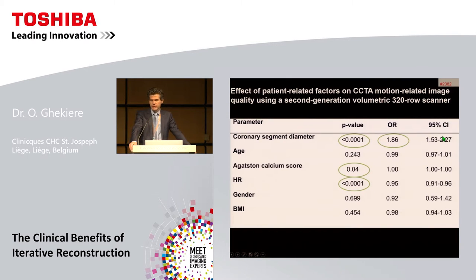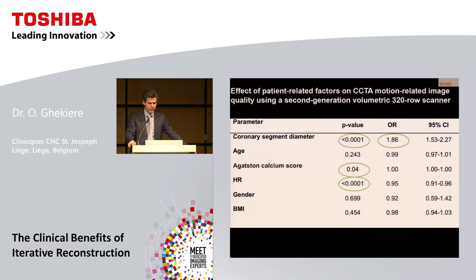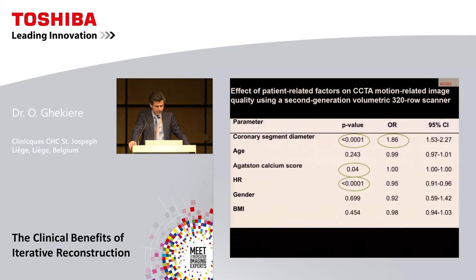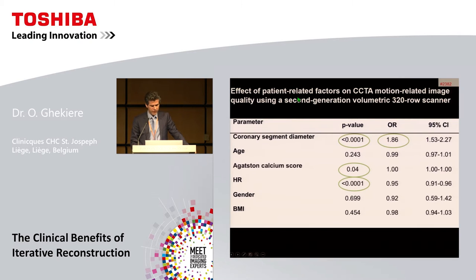Given the technical advances of the second-generation volumetric 320-slice scanner — the Aquilion ONE Vision — with faster gantry rotation time, 16 cm coverage, integrated iterative reconstruction, and automated exposure control, we performed a study evaluating patient-related factors on CCTA motion-related image quality in 200 patients. We found that body mass index, age, and gender had no significant impact. Interestingly, coronary segment diameter was the most important patient-related factor determining CCTA image quality, while a higher heart rate and higher Agatston score had a less negative impact.